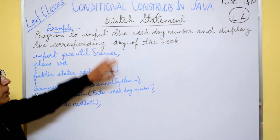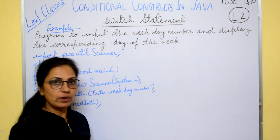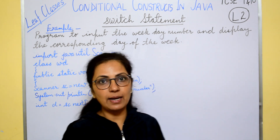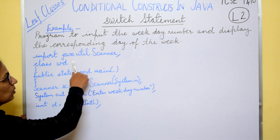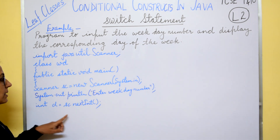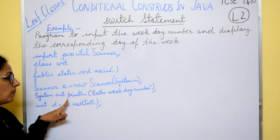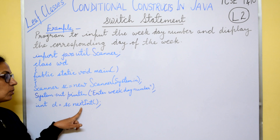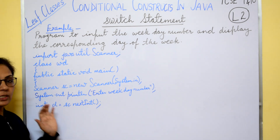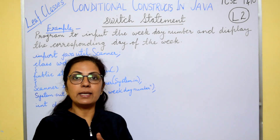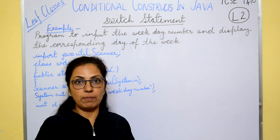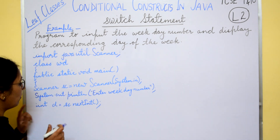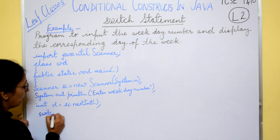Let us see an example for better understanding. I have taken a question: input the weekday number and display the corresponding day of the week. If the user enters one, display Monday; if seven, display Sunday. I have used the util.Scanner package to input values using the nextInt() function. I created the Scanner object, printed a message to enter the weekday number, and stored the input in variable d using sc.nextInt(). The variable d will be our control variable.